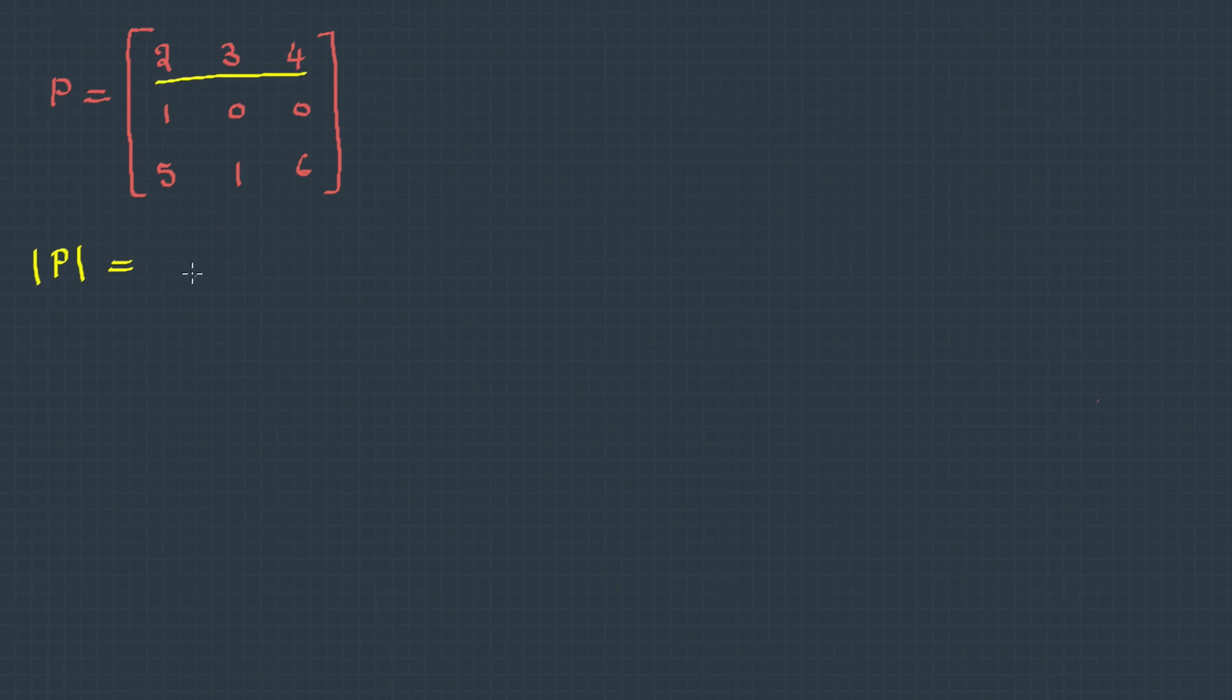So the formula will be this one. You already know that cofactor is basically a minor with a sign, and the sign convention is: if the position i+j, if it becomes even we take positive, if it becomes odd we take negative.